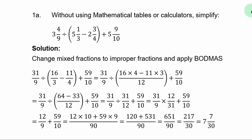Question 1a. Without using mathematical tables or calculator, simplify 3 and 4/9 divided by (5 and 1/3 minus 2 and 3/4) plus 5 and 9/10.